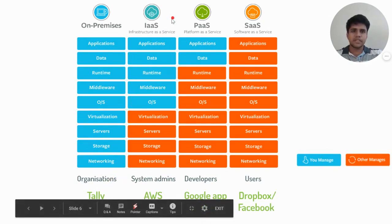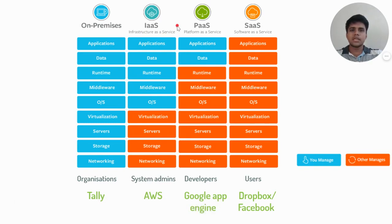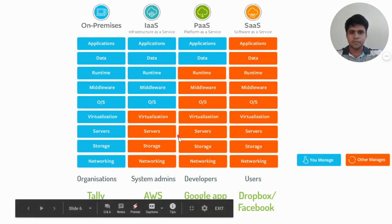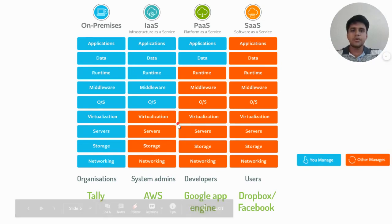Next up is Infrastructure as a Service, shortly called IaaS. This can be equated with take and bake pizza, where the application, data, and OS are hosted on third-party servers and networks. This method is mostly preferred by organizations that cannot afford huge server and network costs. An example is Amazon Web Services, which already owns a huge set of server farms that organizations can use on the go and pay per use.